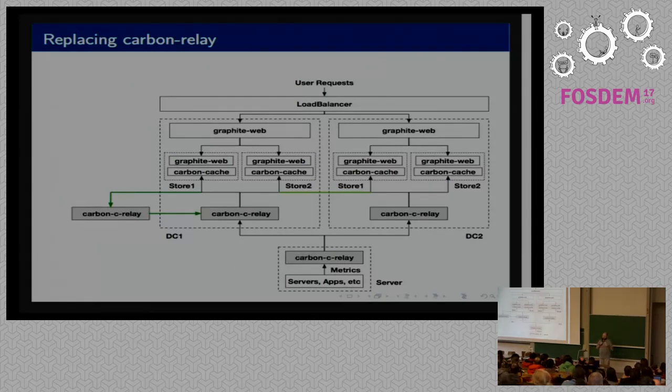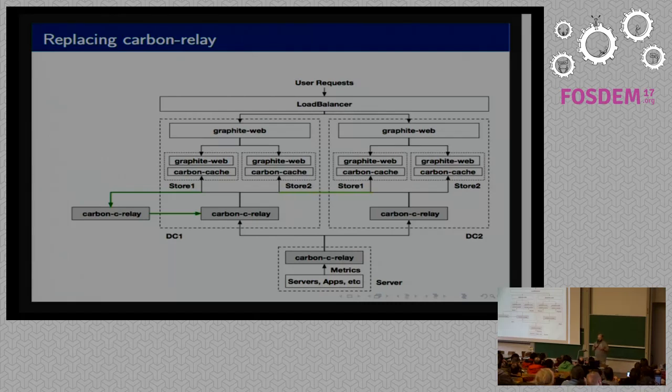We decided to fix all those problems one by one for ourselves. All the stuff we do with Graphite is actually open source and available on GitHub, but links will come later. First of all, we decided to deal with the single point of failure. Last year, we wrote a daemon called Carbon C Relay, which acted as a load balancer. It understands the graphite line protocol. It can do failover, some load balancing. Later, we implemented aggregation parts of the carbon stack also in Carbon C Relay. It also can do some more advanced hashing stuff.